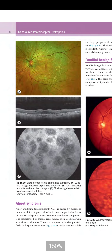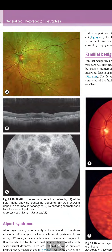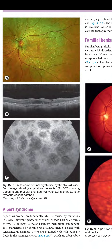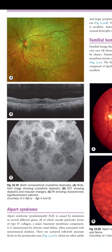Bietti crystalline corneoretinal dystrophy imaging: (a) wide-field imaging showing crystalline deposits; (b) OCT showing deposits and macular changes; (c) FA showing characteristic hypo-fluorescent patches.